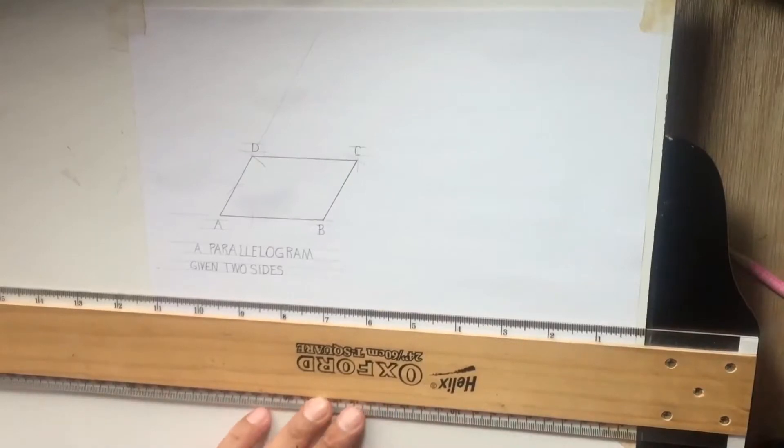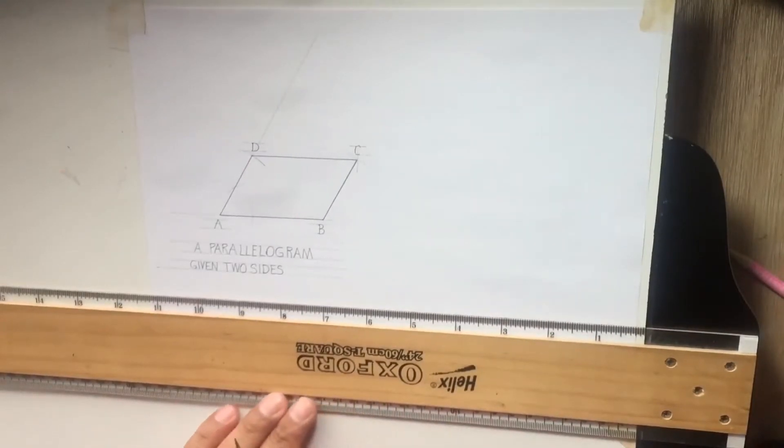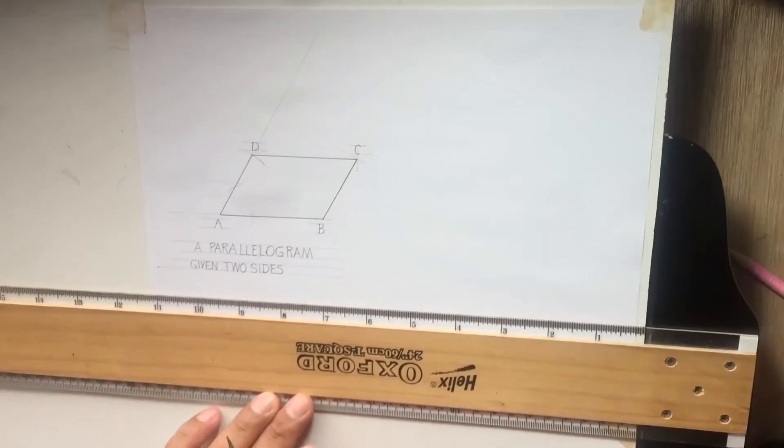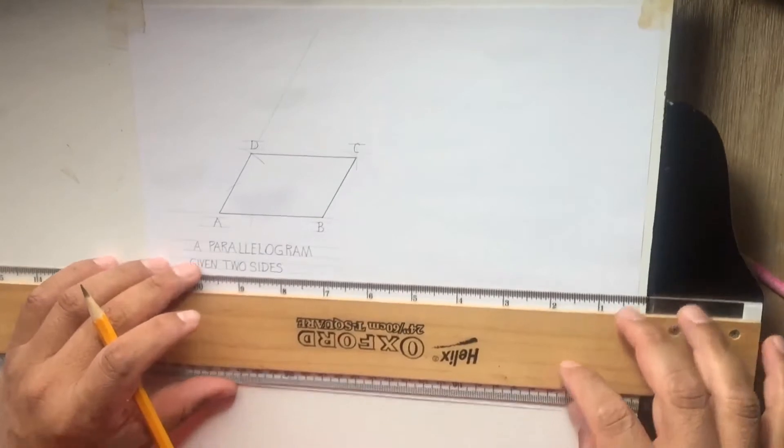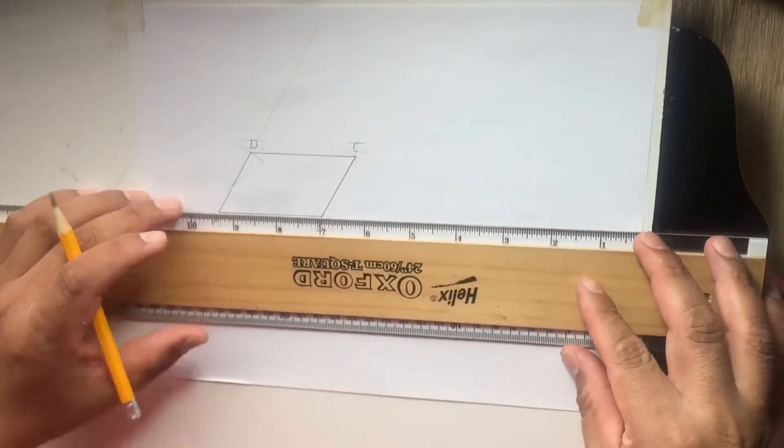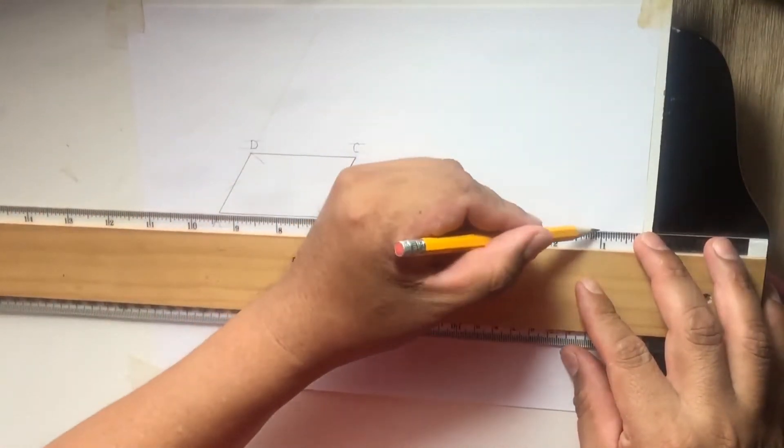To construct a rhombus given the diagonal and one side. One of the characteristics of a rhombus is that all the sides are the same length. So step number one, similar to the parallelogram, a baseline.